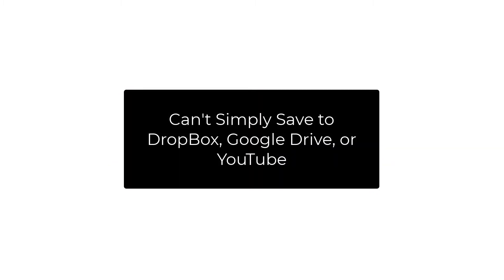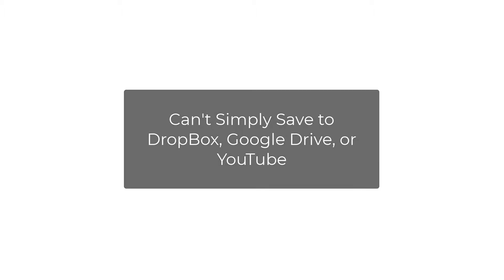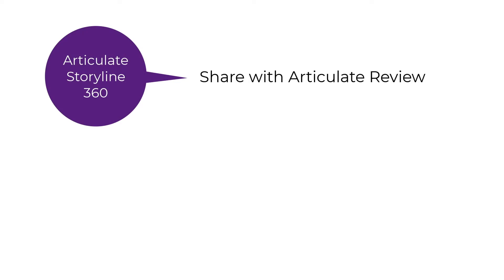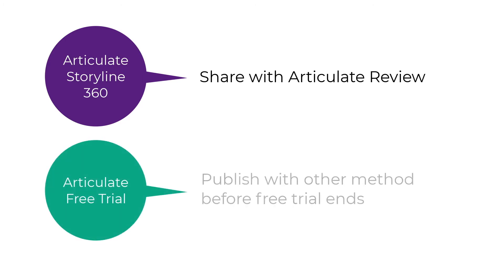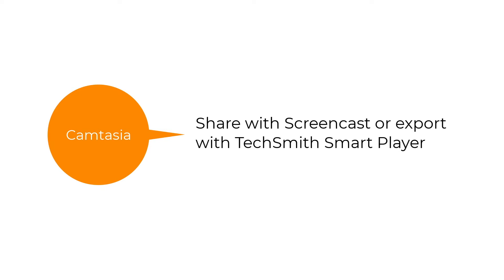First, let's get a quick overview of the possible tools you might use to share e-learning modules and interactive videos. Interactive media usually requires a special sharing method — you can't simply save the files on Dropbox, Google Drive, or YouTube and expect the interactive elements to work. If you have a current Articulate Storyline 360 subscription, you can easily share links with Articulate Review. However, if you're using Articulate's free trial, you'll need to publish your files using some other method before your trial runs out. If you're using Camtasia, you can share links with Screencast, or export the file with the TechSmith Smart Player as mentioned in previous videos. I'll include links to those videos in the show notes below.